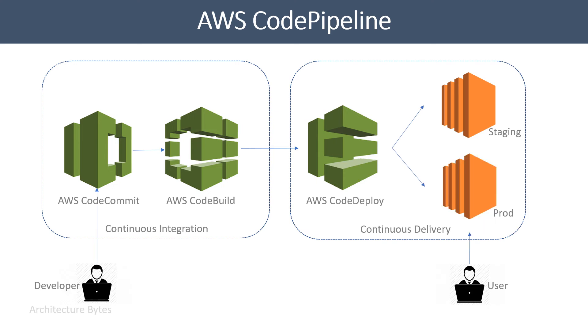Possibly after manual approval, in which case you would add an approval stage to this pipeline. So this is what your AWS Code Pipeline looks like.